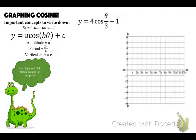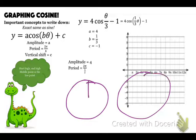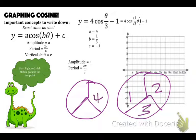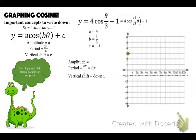Next: 4 cosine of theta over 3 minus 1, which we rewrite as 4 cosine of one-third theta minus 1. So A is 4, B is one-third, C is negative 1. Amplitude is 4. Period is two pi over one-third — one-third goes into 2 six times, so the period is 6 pi. The vertical shift is down 1, so starting from there, go up 4 for the high points, the middle low point is down 4, and there is that graph.